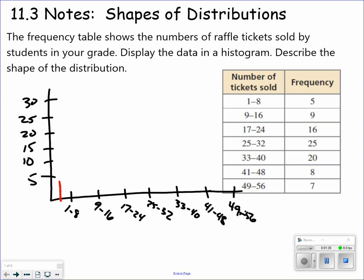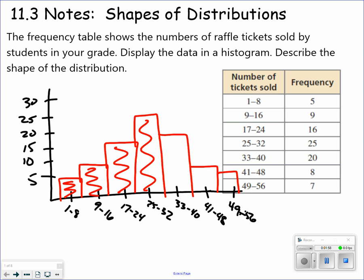So the first one is 5. Next one is 9, 16, 25, 20, 8, and 7. Now, I usually like to fill it in just to give it a little color. And there it is. So that's how I do my histograms, and I know a few of the teachers are a little bit different than me. They don't actually do it this way. So we'll see if they want to do their own video or not.